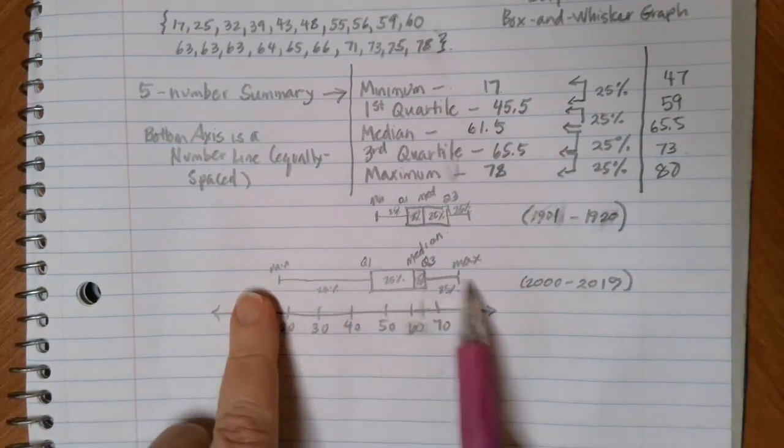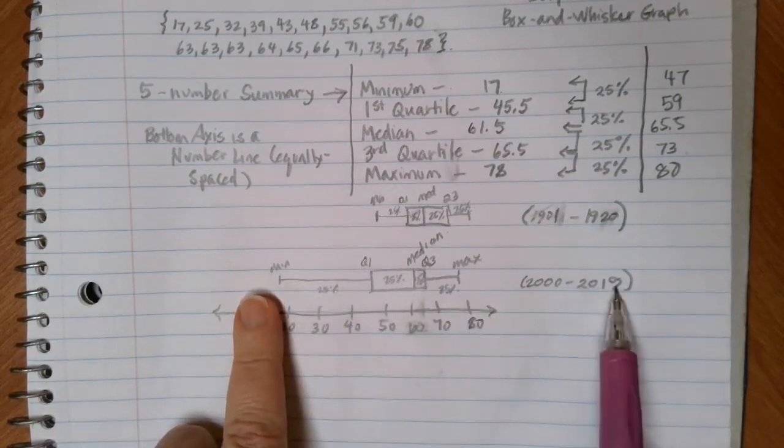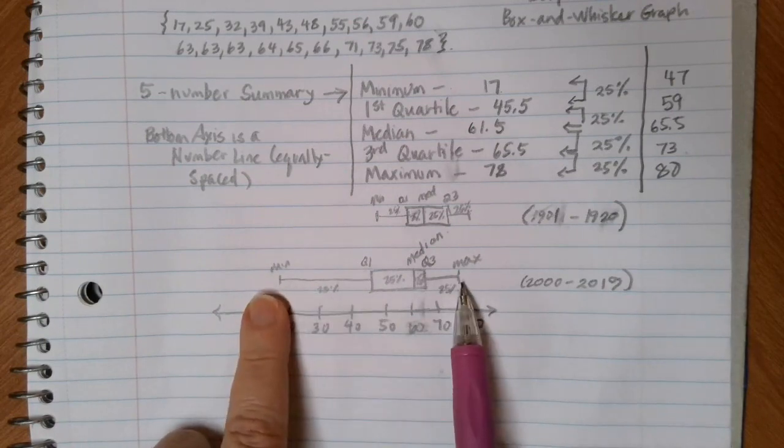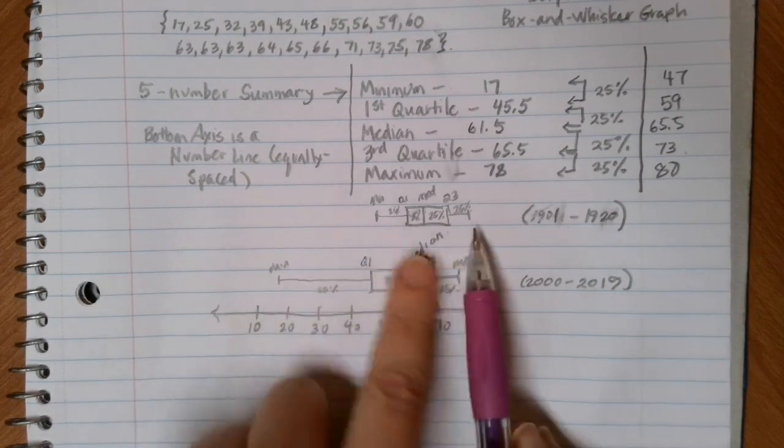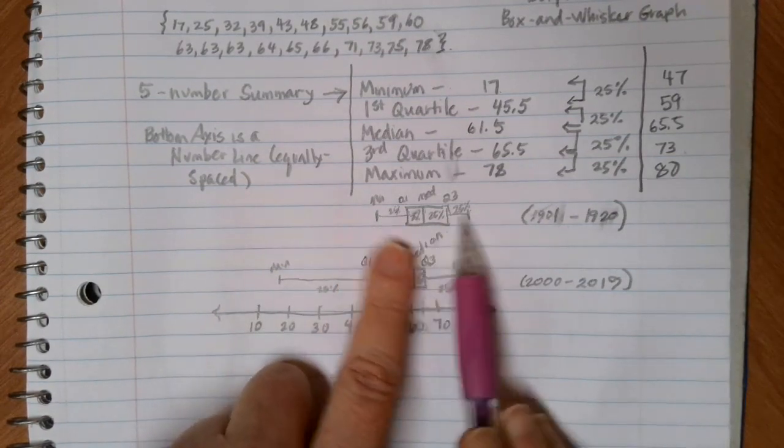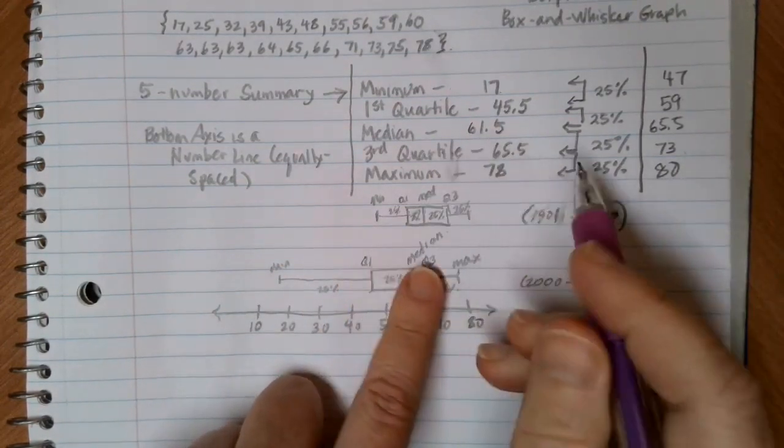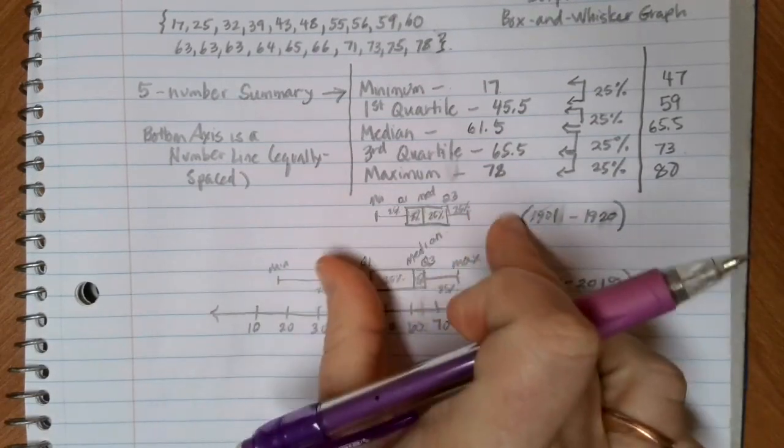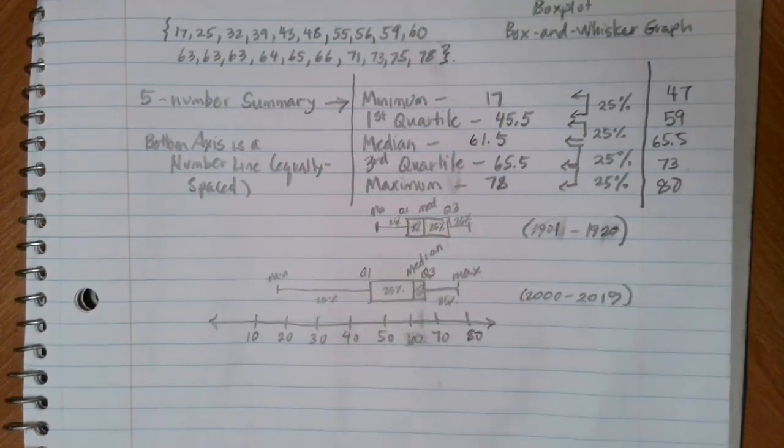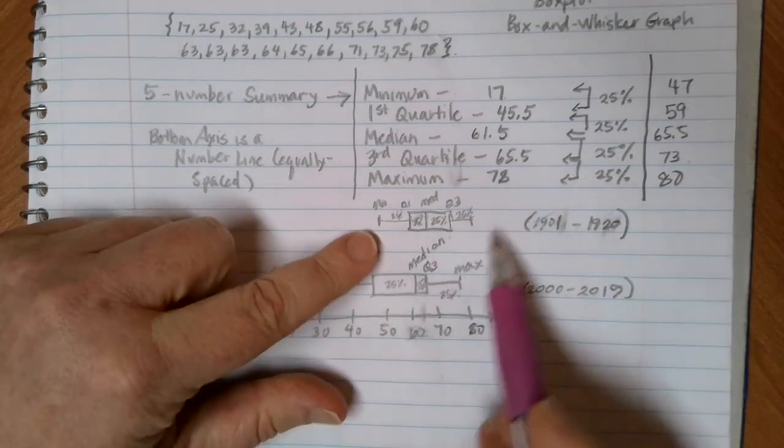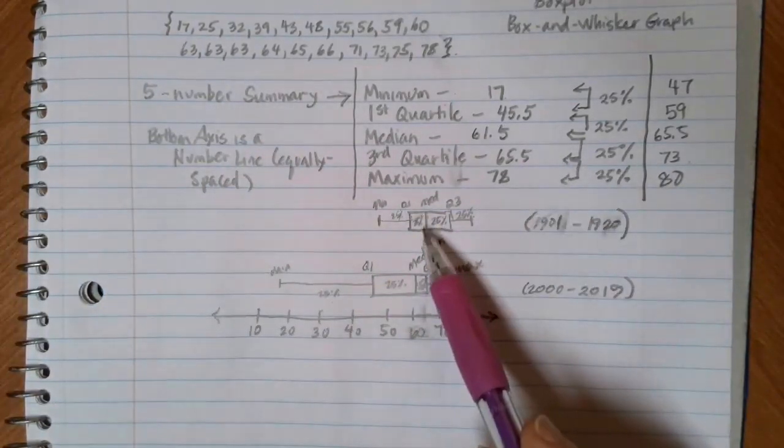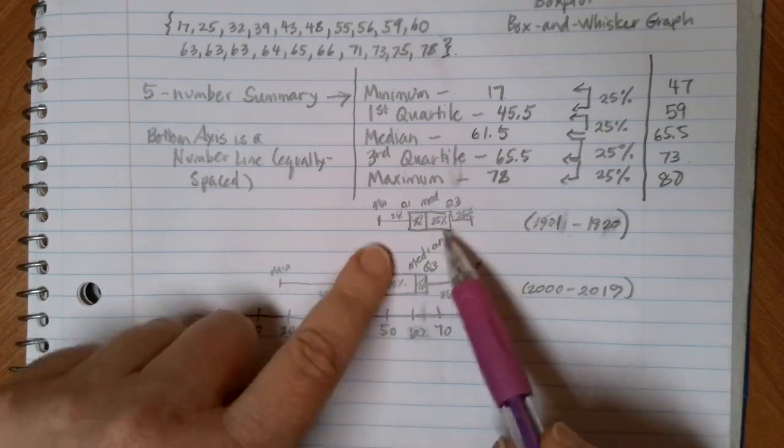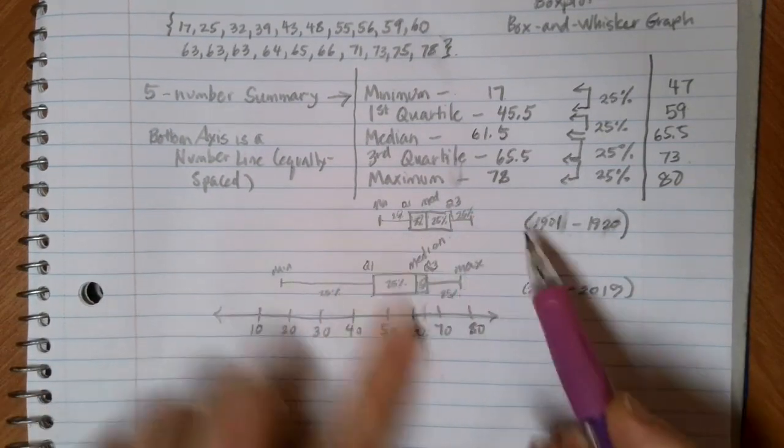Notice how much bigger that spread was between 2000 and 2019. We had a much broader range of ages skewed towards the left here. This is pretty symmetric. If you can kind of see, we do have a small amount of skew, but pretty much everything is kind of equally spaced on each side of the box.